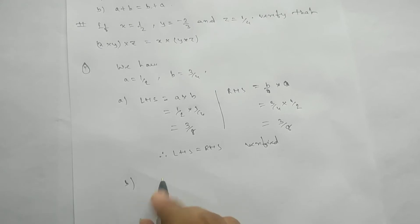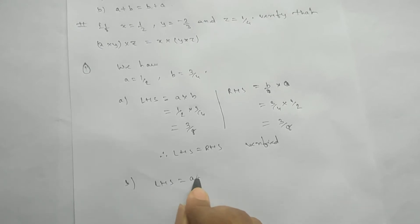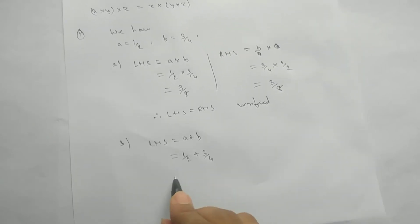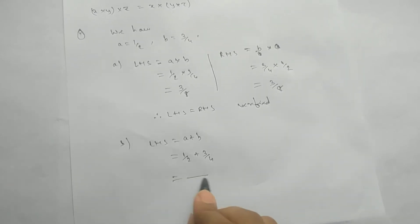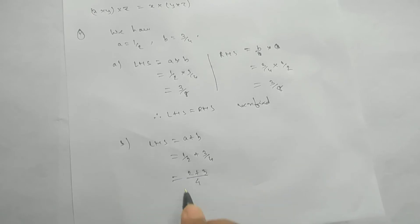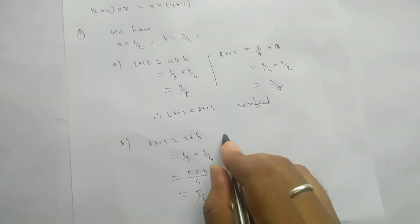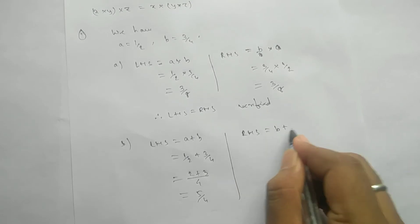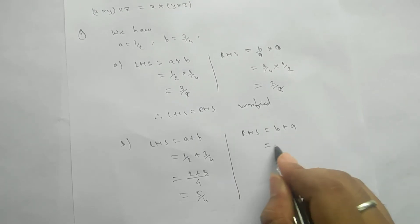For the second part, commutative property under addition: LHS is a plus b, that means one by two plus three by four. We take the LCM, which is four, giving us two plus three, that is five by four.